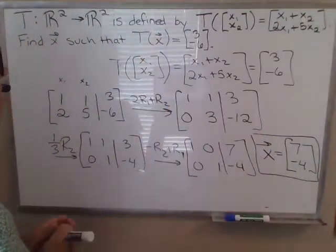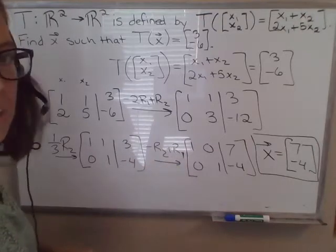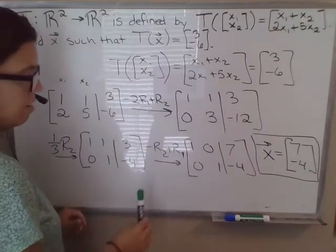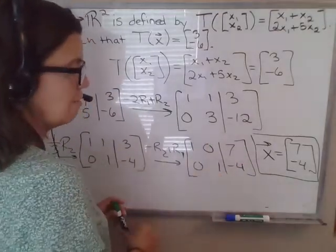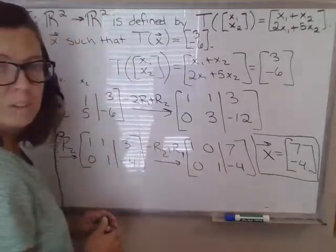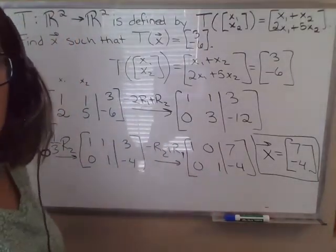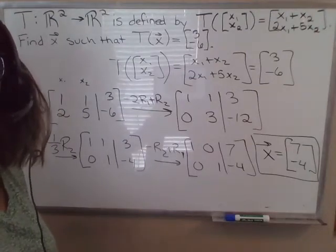Notice that this equation has a unique solution because there's a pivot in every row. And we know that it's consistent because there's a pivot in each of these columns, each of the variable columns. That's just something to point out that you'll see come up in the discussion later on in this section.